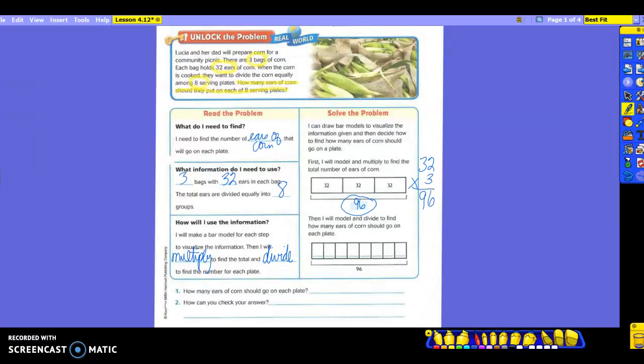Then I'm going to model and divide and find out how many ears of corn should go on each plate. So I want you to look at the model that they have drawn. Your 96 that you just came up with is where? On the bottom again. So how many boxes are here? Eight. The eight for what? What's the eight standing for? The serving plates that we're going to put them on. So how am I going to be dividing that? What am I going to do to find what goes in those little boxes?